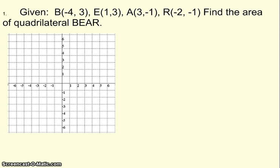So B is at negative 4, 3. From the origin, you're going to go 4 to the left and 3 up. E is 1, 3. So from the origin, you're going to go 1 to the right and 3 up. A is at 3, negative 1. So 3 to the right and 1 down.